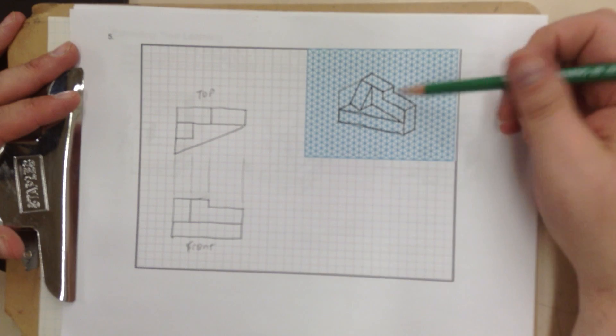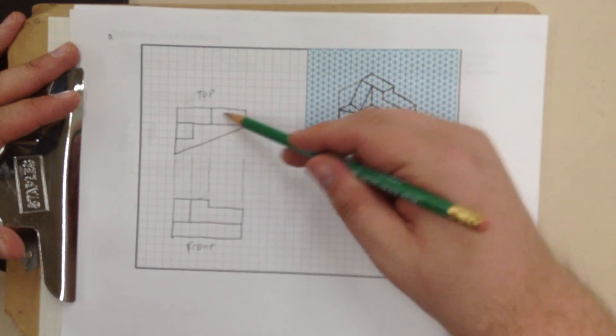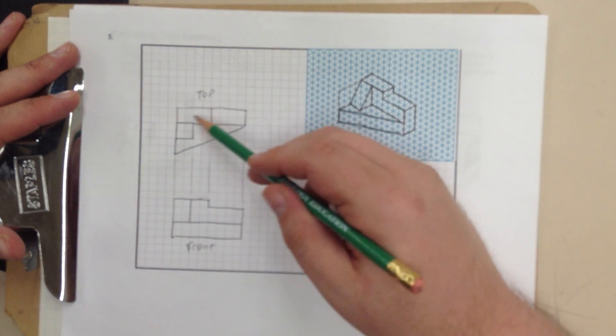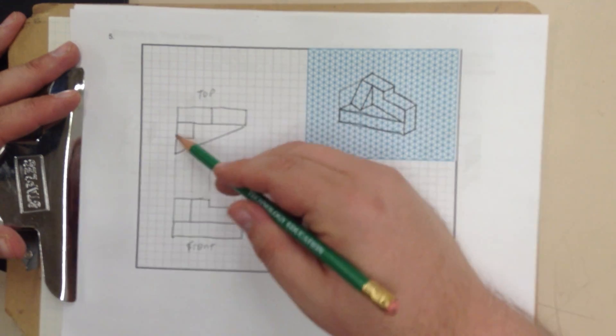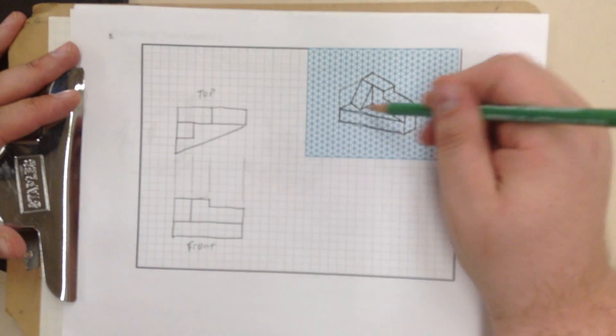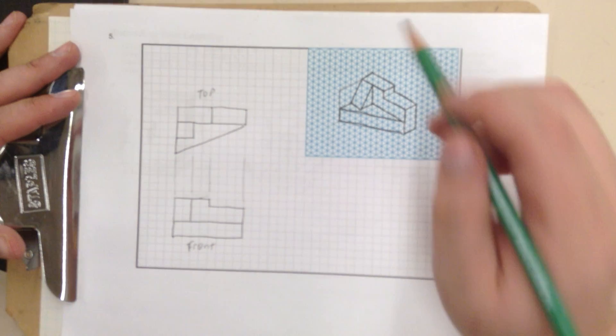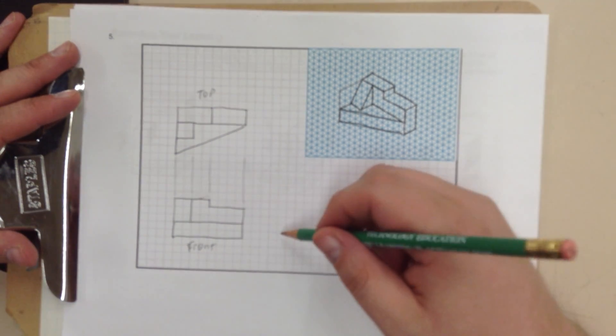Will look like this. Take inventory. I've got this flat part right there. I've got this flat part right there. I've got my angled part right there. I've got this angled part right there. Okay. Now, for the front view.